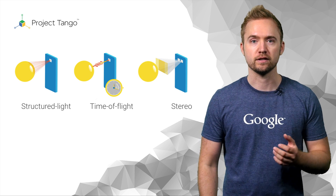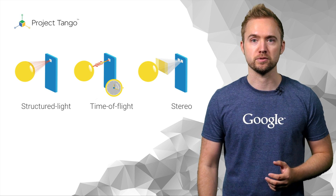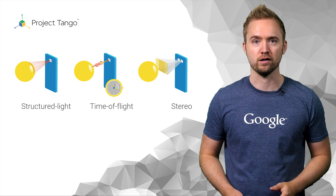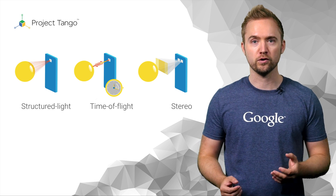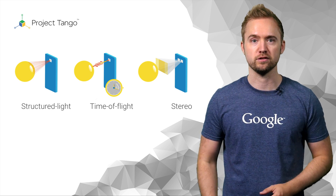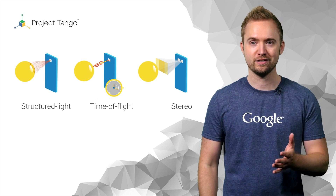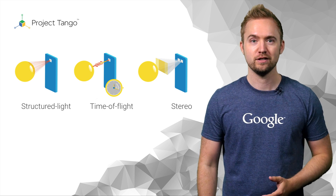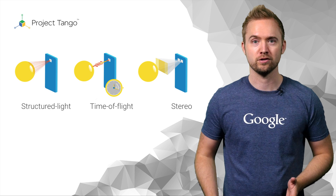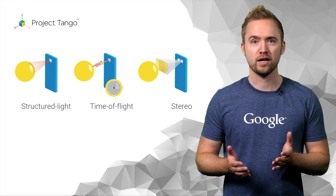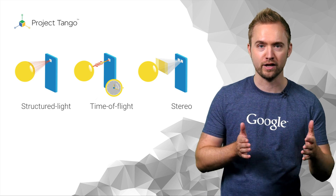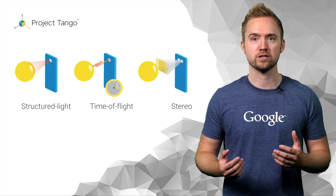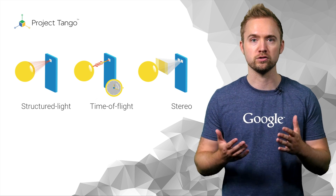Third, there are stereo systems, which capture the scene with two cameras a short distance apart and infer depth using triangulation. This is very much how human eyes work. Two eyes, or cameras for that matter, that are able to see the same scene from slightly different angles enables the viewer to gain a perception of depth using trigonometry.